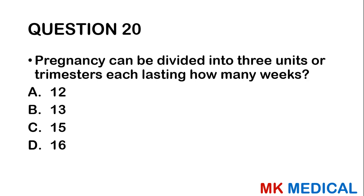Question twenty: Pregnancy can be divided into three trimesters, each lasting how many weeks? A, 12 weeks; B, 13 weeks; C, 15 weeks; D, 16 weeks. If you get this wrong, please go study — just kidding. Most likely it's 13 weeks. Each trimester is divided into 13 weeks.